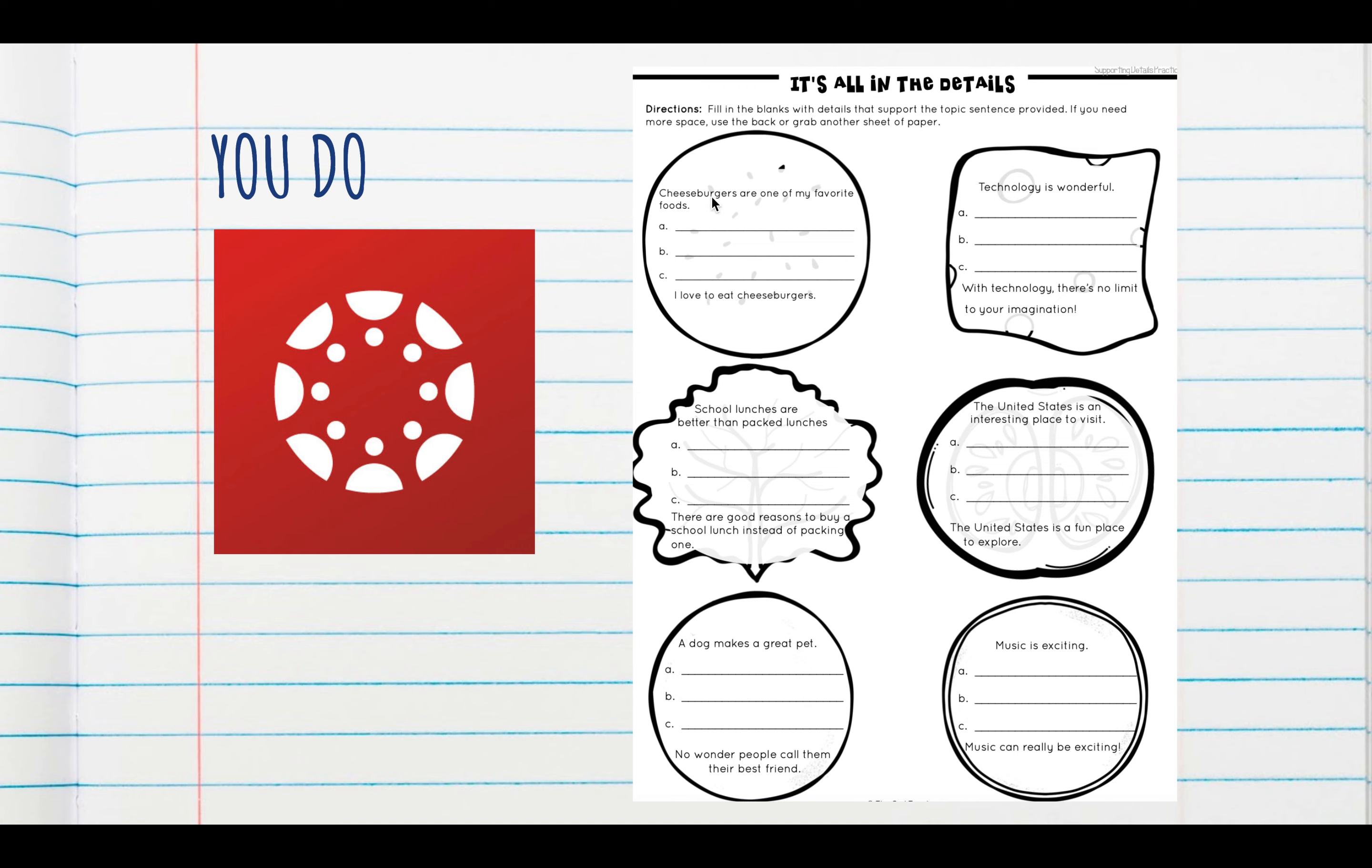For example, number one is about cheeseburgers. The topic sentence here says cheeseburgers are one of my favorite foods. The concluding sentence says I love to eat cheeseburgers. So on these three lines here, you're going to provide three supporting sentences that support the topic sentence. And that's how all of the other examples are as well. You're given the topic sentence and the concluding sentence, and you just have to create some supporting sentences that support that topic sentence.